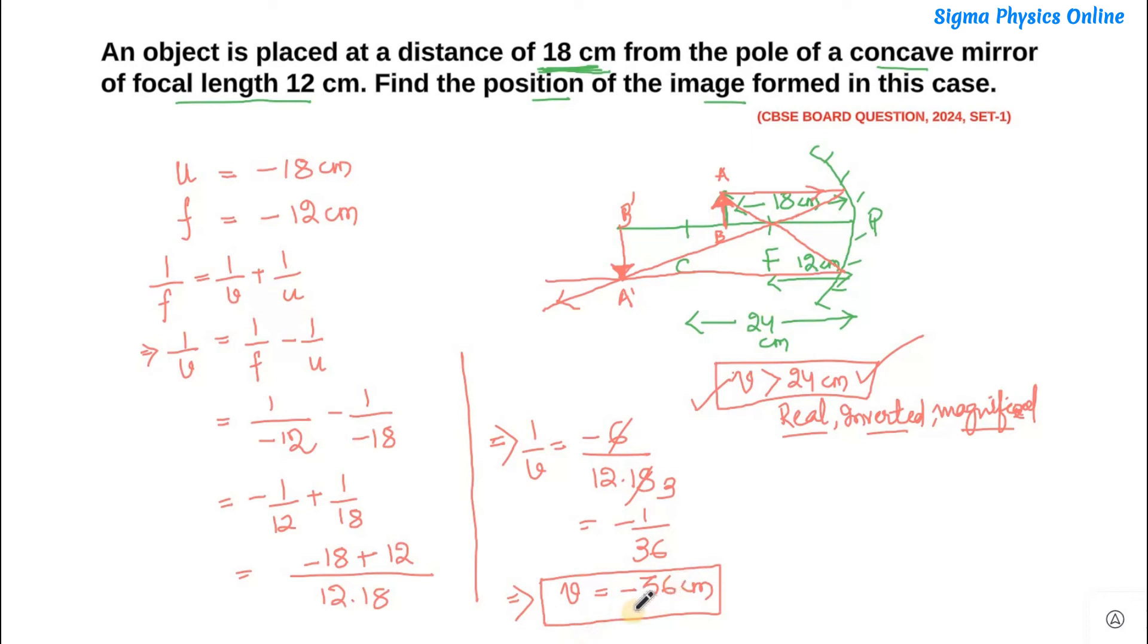That is, to measure the image distance we have to go towards the left from the pole. So we get the value of v as negative. Then the image is a magnified one and it's a real and inverted image.